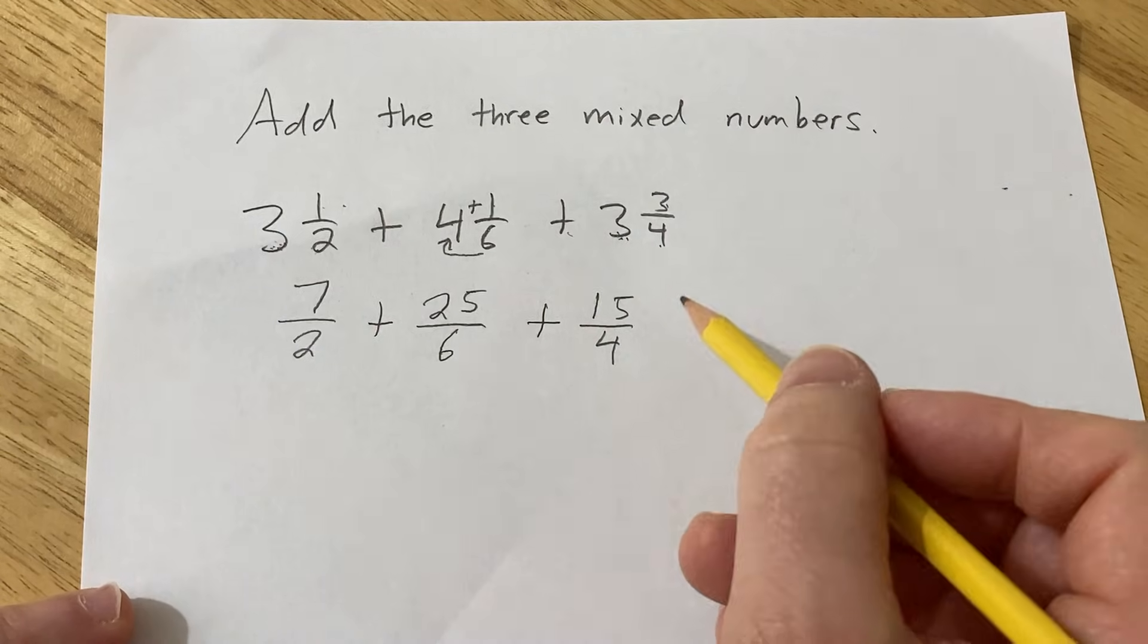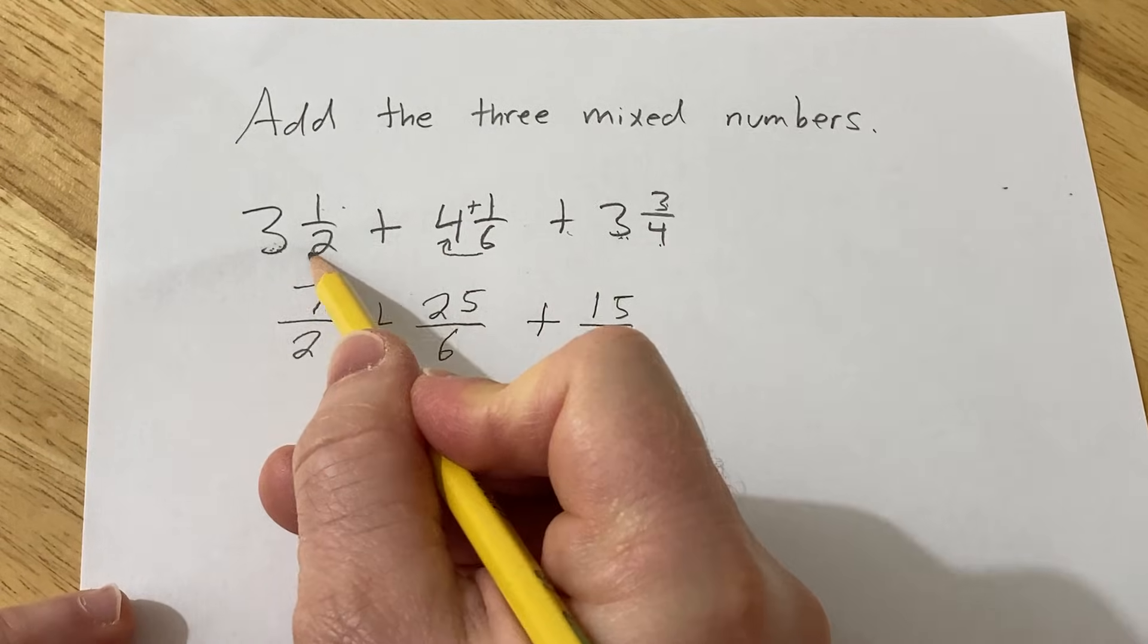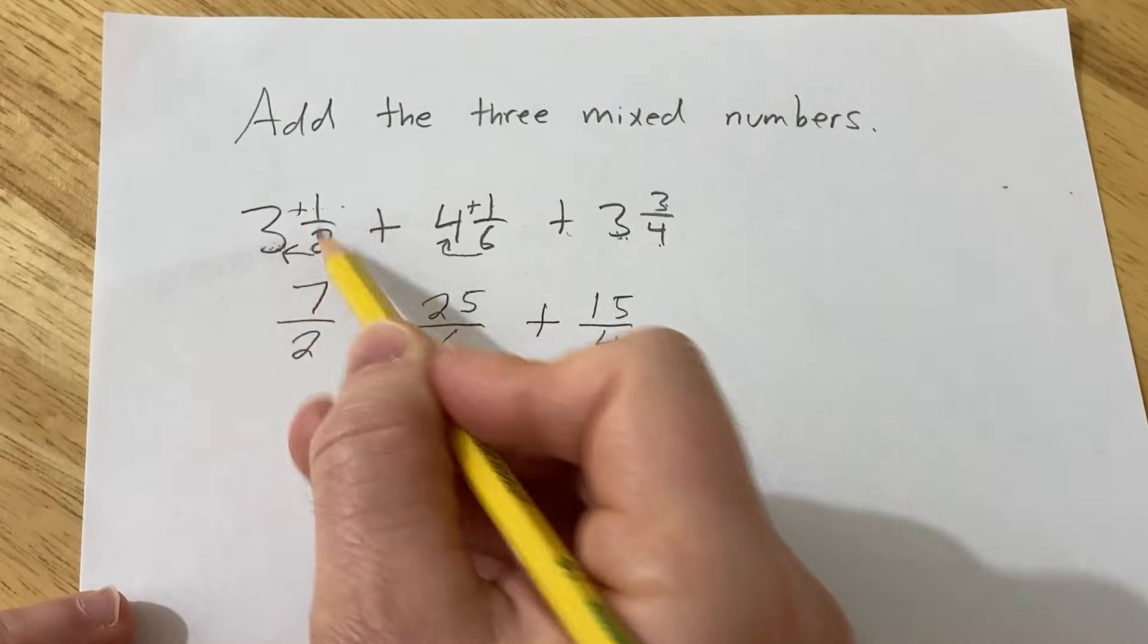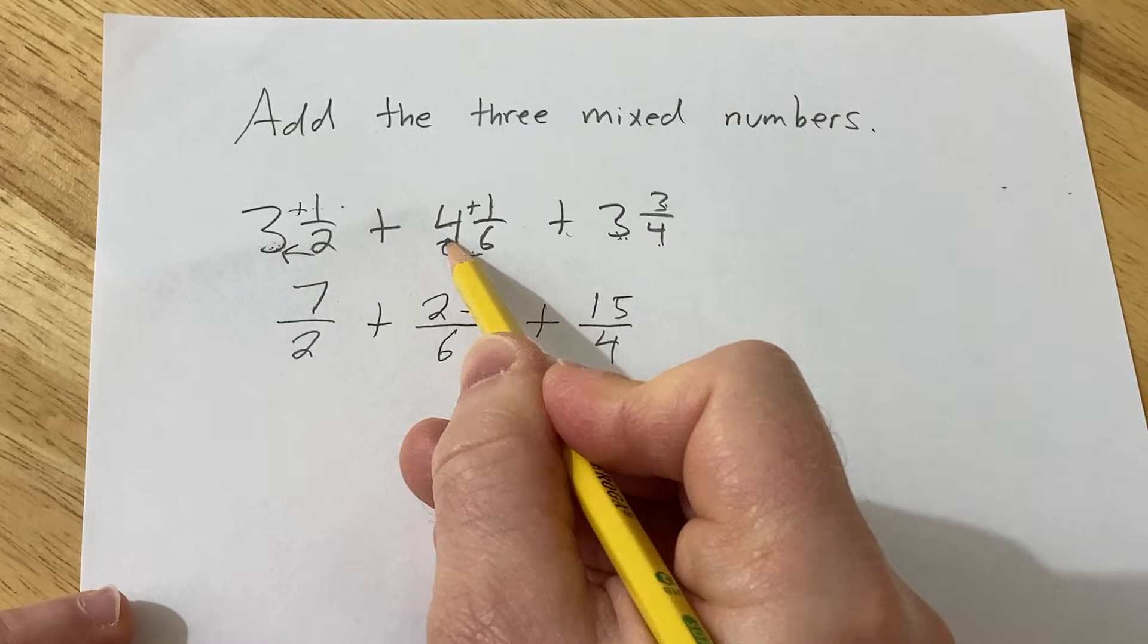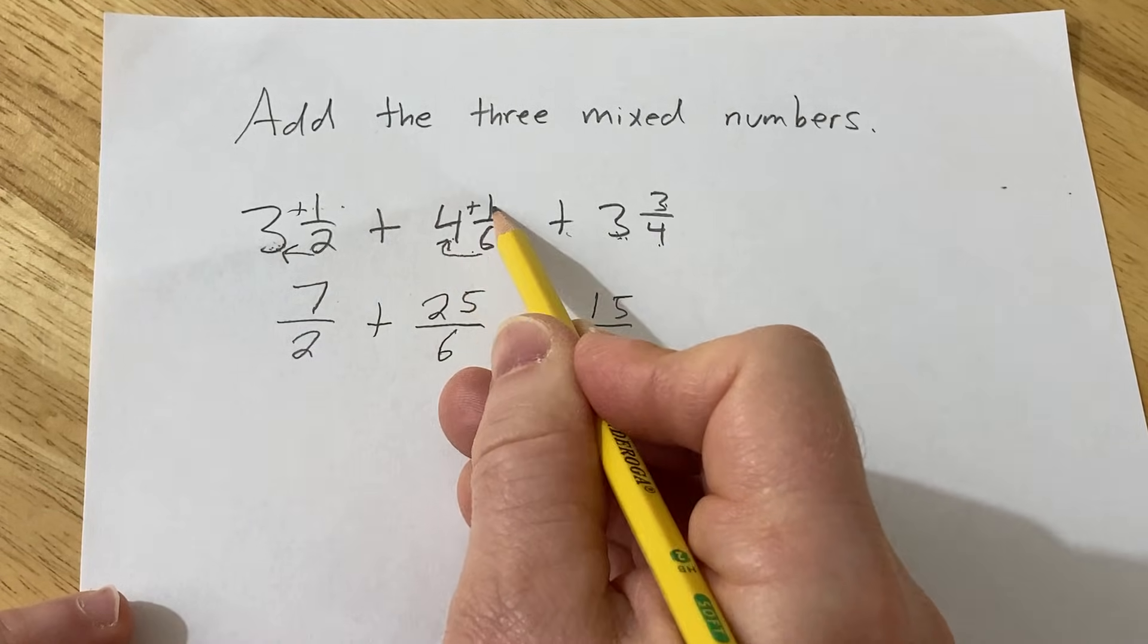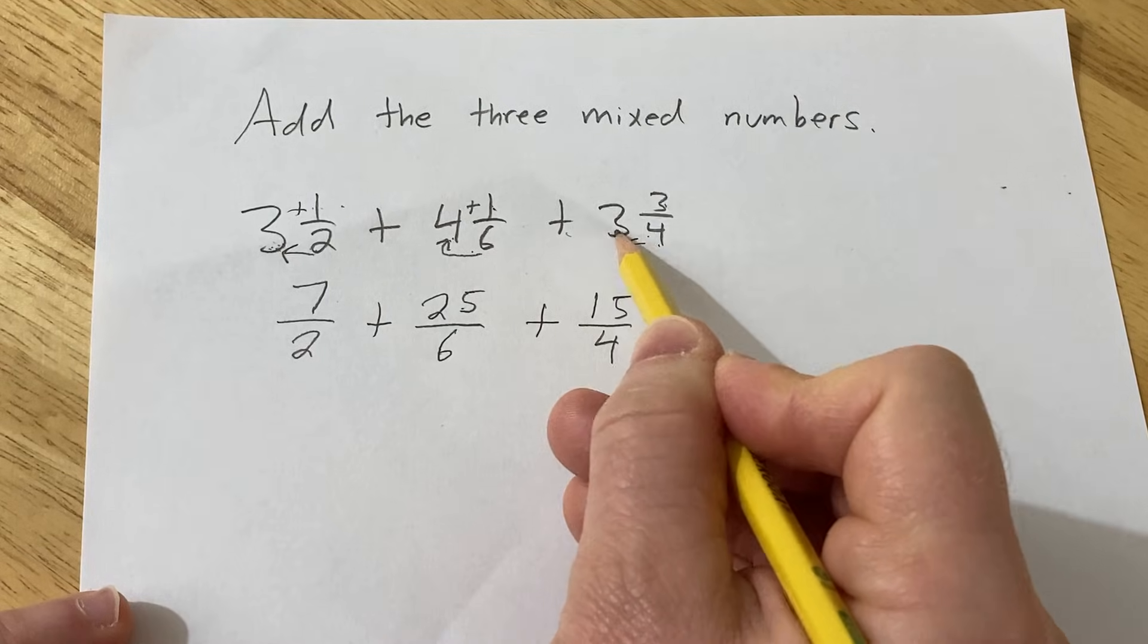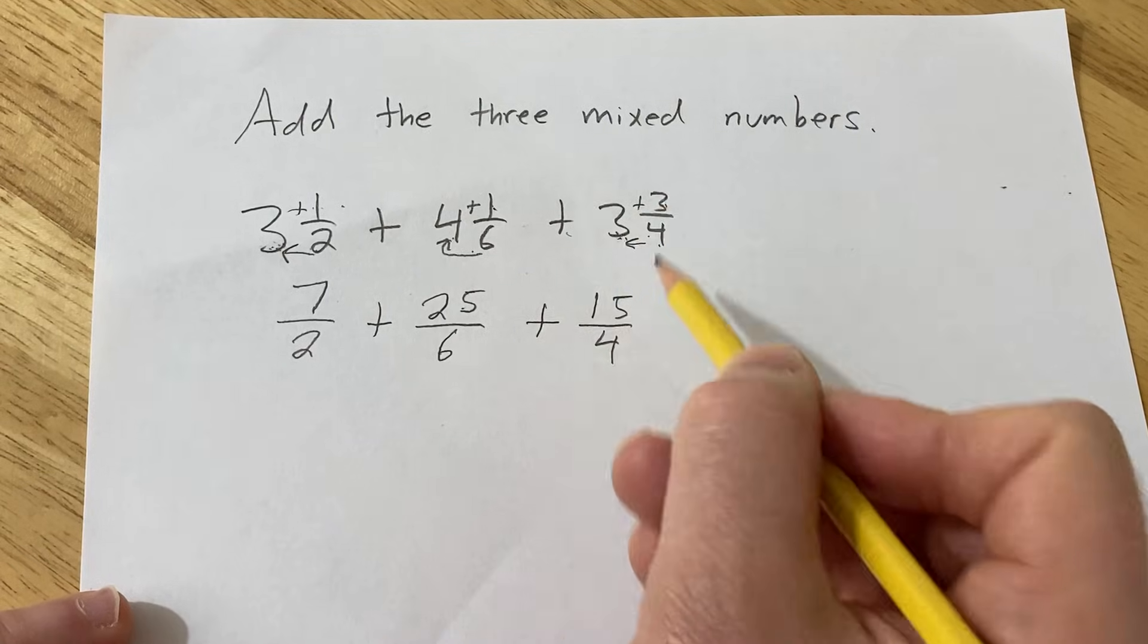Let's just double check our work just to make sure we did that correctly. So you multiply here, so you get 6, and then you add it to 1, so that's 7. You multiply here, so you get 24, you add it to 1, that's 25. You multiply here, you get 12, you add it to 3, you get 15.